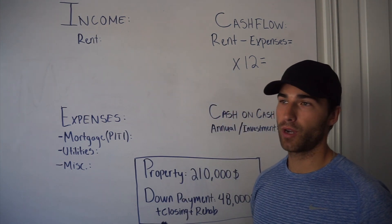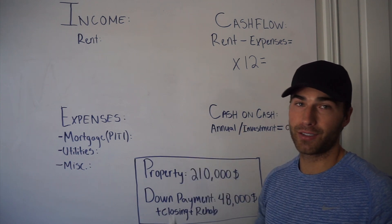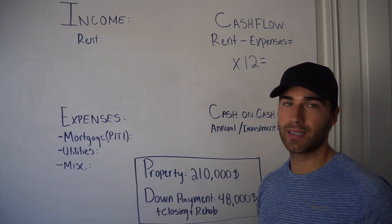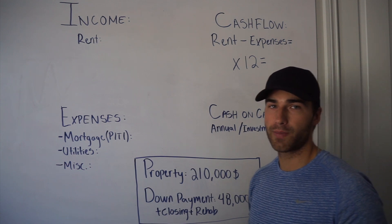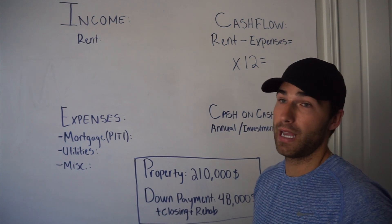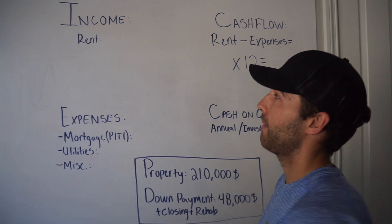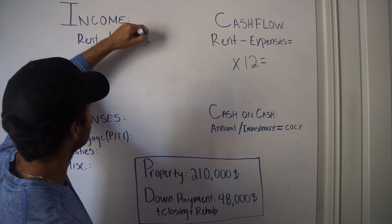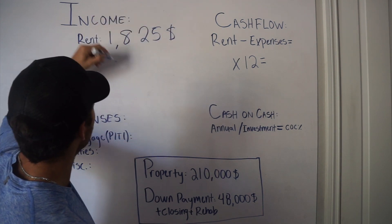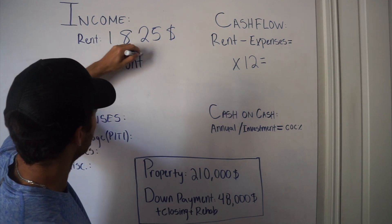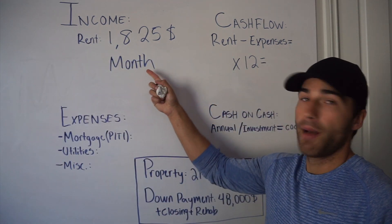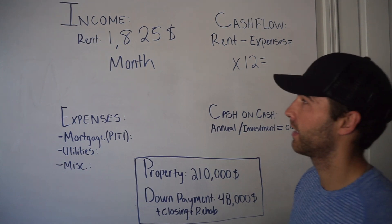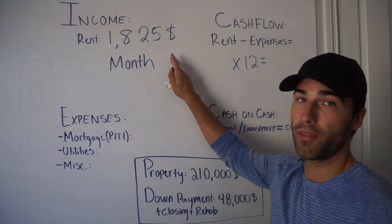Income is a very simple, straightforward approach. A lot of the time there's only one thing that goes into income, and that is your monthly rent — what your tenants are paying you to live there. Sometimes with bigger properties there are other income sources like laundry. But for me, to keep this simple, the only income I have on this property is rent. I'm taking in $1,825 a month. So every single month my bank account gets $1,825, as long as all my tenants pay on time, which they have for the last nine or ten months.